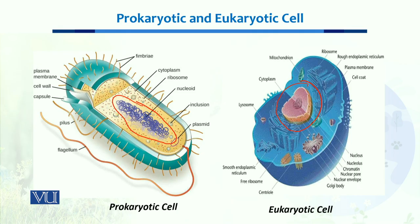Other than that, we can see the different membrane-bounded organelles present in eukaryotes. These include the endoplasmic reticulum, mitochondria, lysosomes, and Golgi bodies. These are some of the advanced membrane-bounded organelles which are absent in a bacterium.